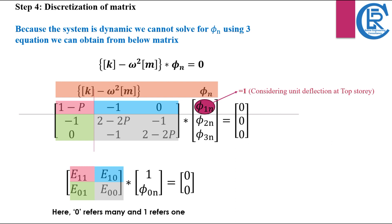To make the problem more manageable, let's divide the matrix into four parts: e11, e10, e01, and e00, where 0 refers to more than one (many) and 1 refers to one.